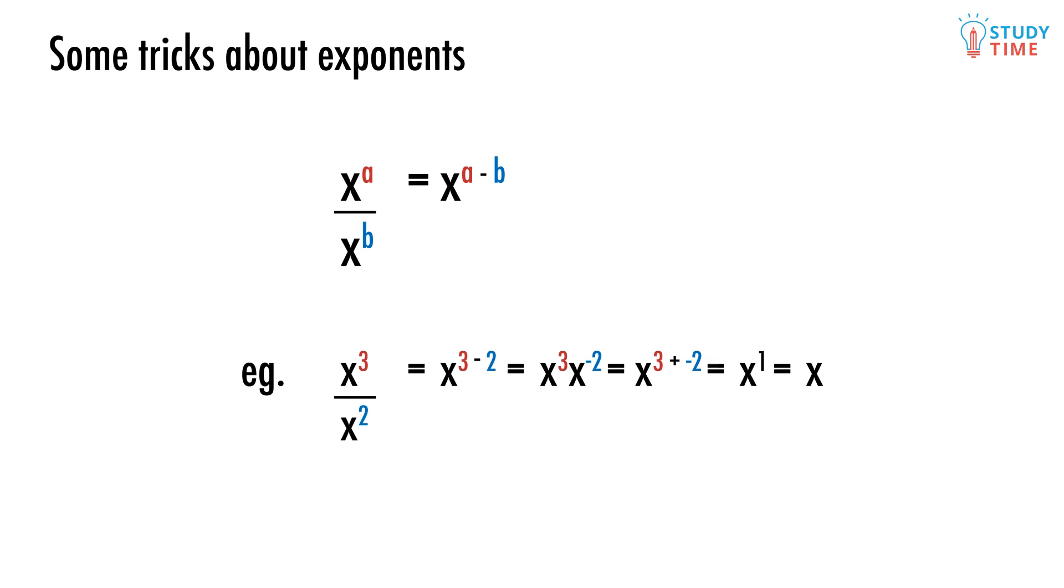So x to the power of 3 divided by x to the power of 2 equals x to the power of 3 minus 2, which also equals x to the power of 3 times x to the power of negative 2, because 1 over x squared is the same as x to the power of negative 2. And x to the power of 3 times x to the power of negative 2 equals x to the power of 3 plus negative 2. And so all of these luckily equal the same thing: x to the power of 1, or just x.